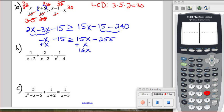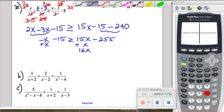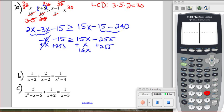It doesn't matter, you could have put it on the other side, but I just like to put it where our x is going to be positive. So these two cancel, and let's add the 255 to both sides. So that goes away. We get 16x is less than or equal to...